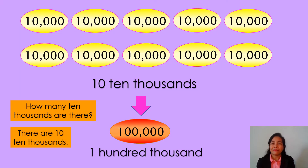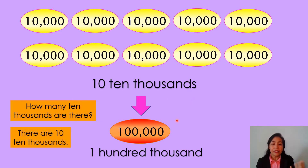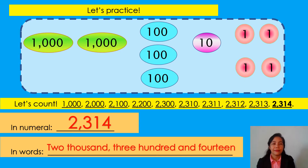Good job! Look at this number. What number is it? You are good, it's correct — 10,000. How many 10,000s are there? Let's count: 1, 2, 3, 4, 5, 6, 7, 8, 9, 10. There are ten 10,000s. Ten 10,000s is the same as 100,000. Let's count once again: 10,000, 20,000, 30,000, 40,000, 50,000, 60,000, 70,000, 80,000, 90,000, 100,000. Good job, kids! All right.